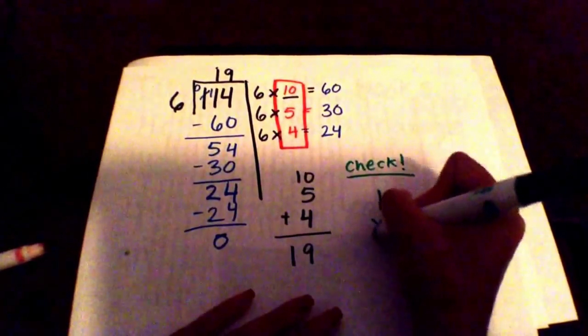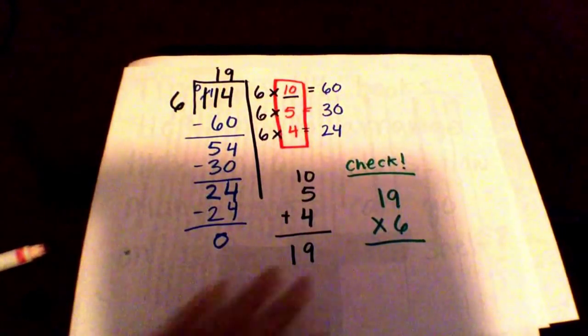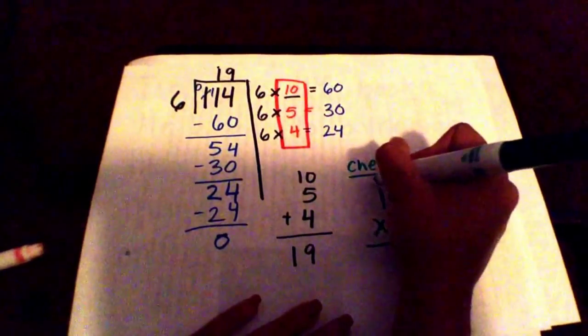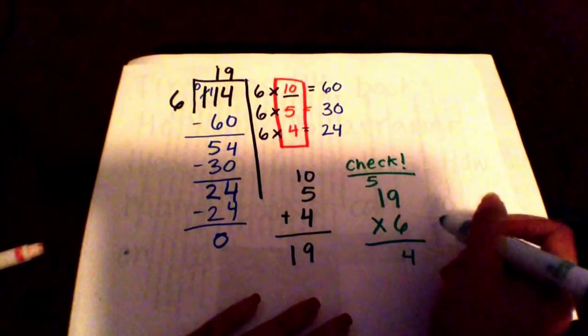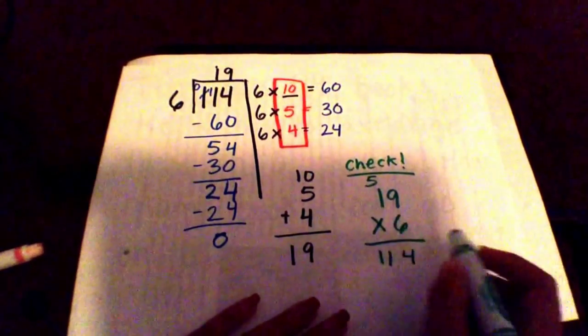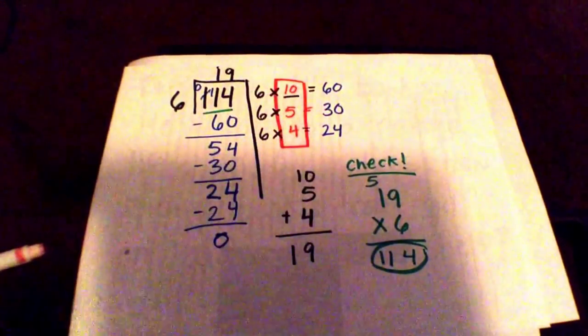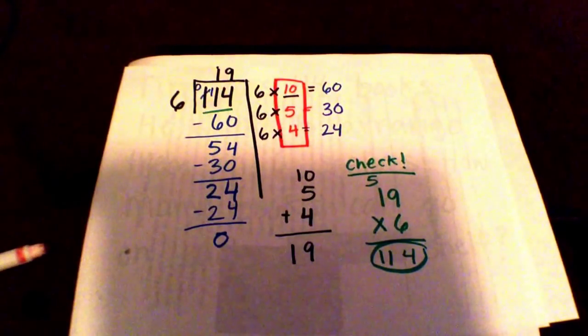Nineteen times 6. Six times 9 is 54. I put my 4 and carry my 5. Six times 1 is 6, plus 5 is 11. So 114 does match with my dividend, 114. That means my answer is correct.